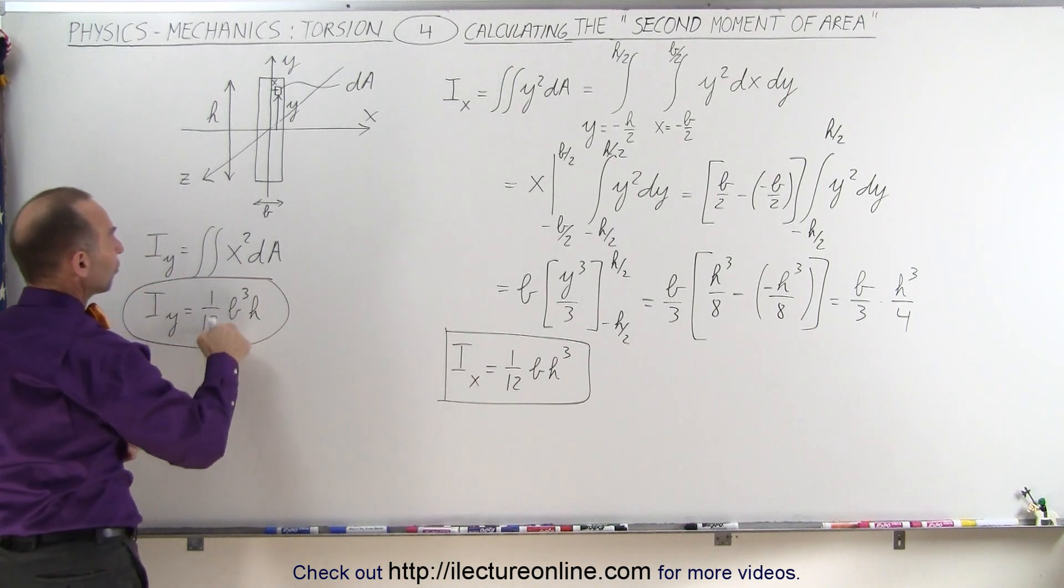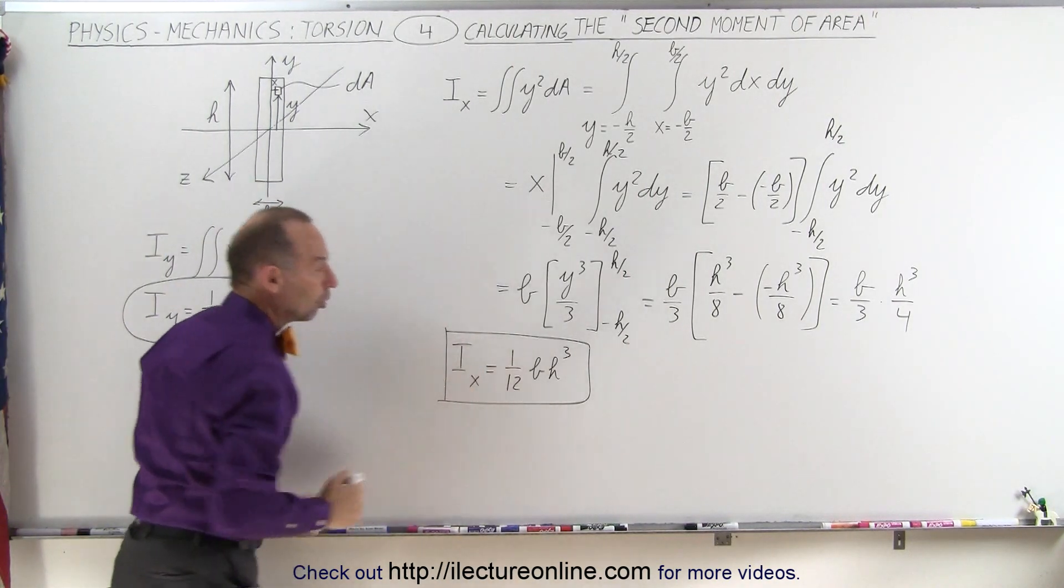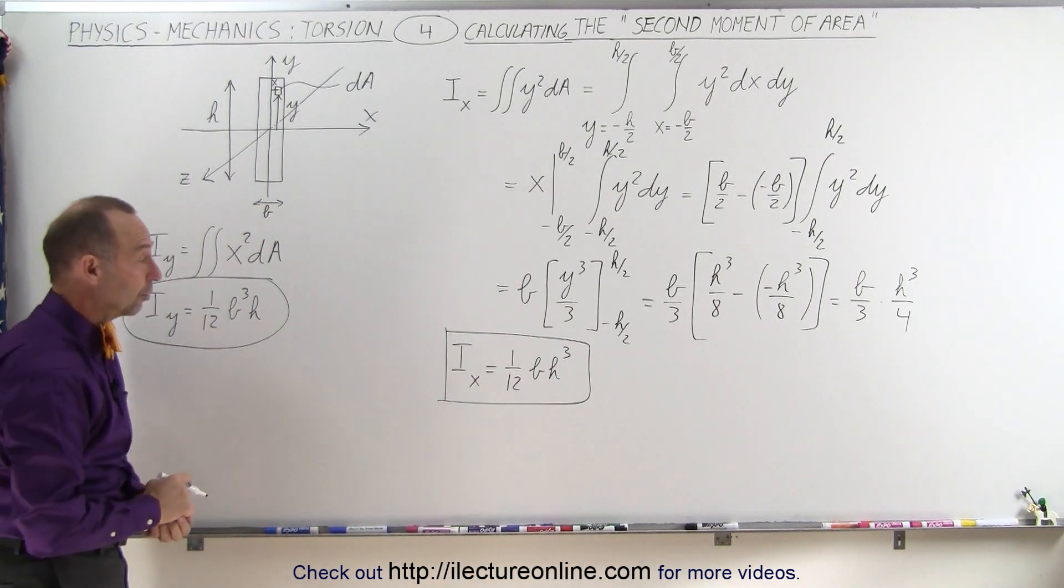And notice, since b is a much smaller number, this will be a much smaller quantity. This will be a much larger quantity, since h is large.